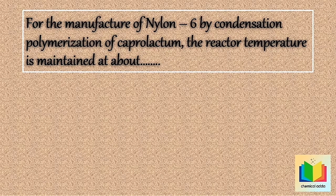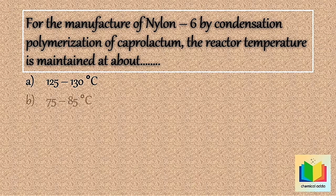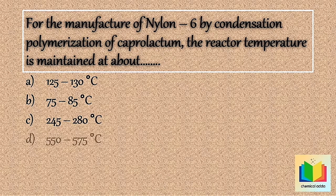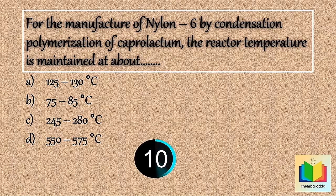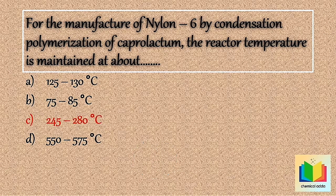Next question: For the manufacture of Nylon 6 by condensation polymerization of caprolactam, the reactor temperature is maintained at about — . Option A: 125 to 130 degree Celsius. Option B: 75 to 85 degree Celsius. Option C: 245 to 280 degree Celsius. Option D: 550 to 575 degree Celsius. [10 seconds] So the answer is Option C: 245 to 280 degree Celsius.